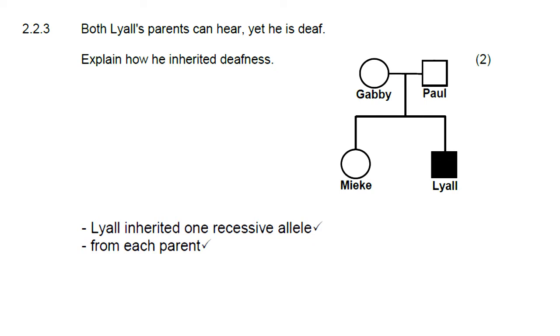Right now we move on to Lyle. Now Lyle is here at the bottom and as we can see from the key Lyle is deaf. Both of his parents can hear and they want us to explain how he inherited the deafness. Now we know that both of his parents need to have a capital H each because they can both hear. And because Lyle is deaf that means that he is homozygous recessive. That means he got a small letter h from Gabby his mom and he got a small letter h from Paul his dad, which makes his parents heterozygous.